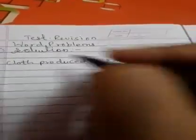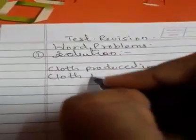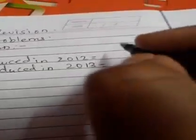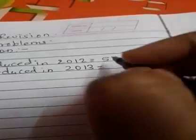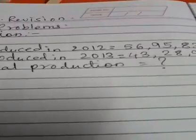So first statement I will write down the solution. It was a total production. Now, what is my question? Total production. How much is the total production? So, I do not know. It is a question mark. Now what I am going to do? I am going to add this.